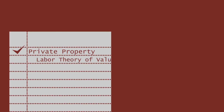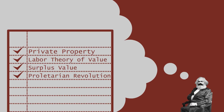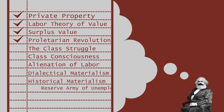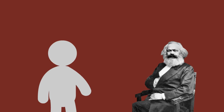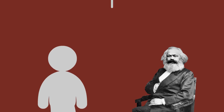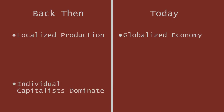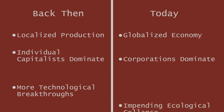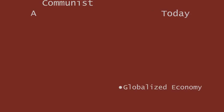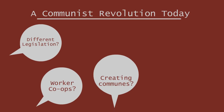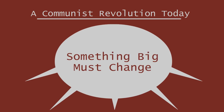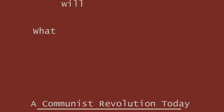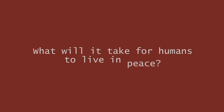This was a simple overview of some of the thoughts of Karl Marx. There are many more of his ideas that are central to his work that we did not even touch upon, so hopefully this stoked your curiosity to learn more. In many ways, conditions today are different from how they were in Marx's time. It's hard to say what a modern-day communist revolution would look like, but it is clear that a deep change must happen if we want to survive. What will it take for humans to live in peace?